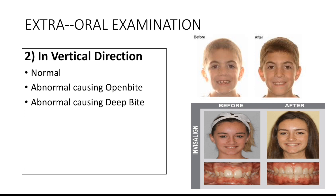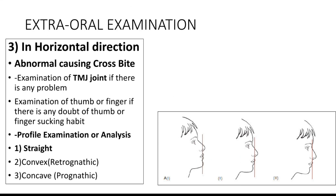In the vertical direction during external examination, we look for what is causing an open bite or deep bite. In the first picture, the patient has an open bite — before and after pictures — and you can see the space between the upper and lower teeth and the tongue. In the second picture, the patient has a deep bite, and you can clearly differentiate it in the before and after pictures.